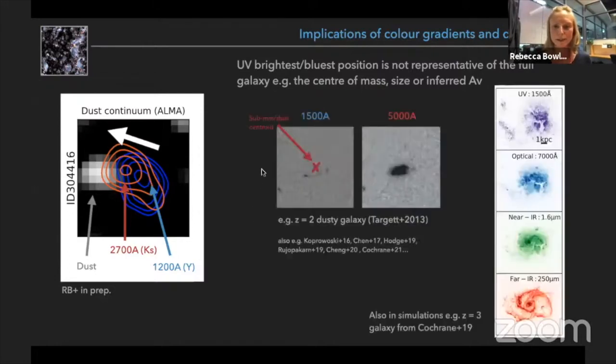So this has been seen many times before in the literature at lower redshift and also to higher redshifts as well in the submillimeter community, where essentially the different wavelengths probe different parts of the galaxy.